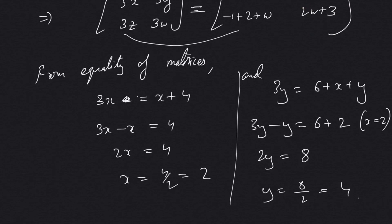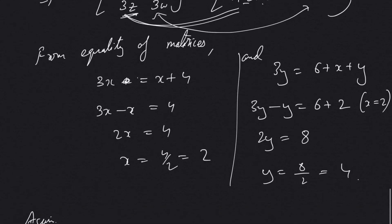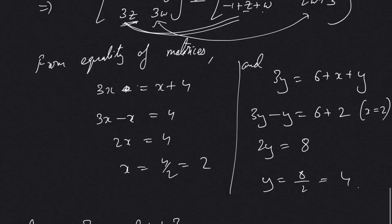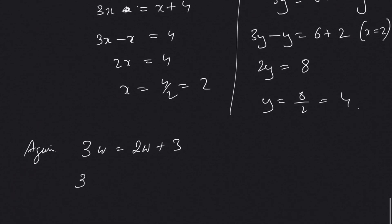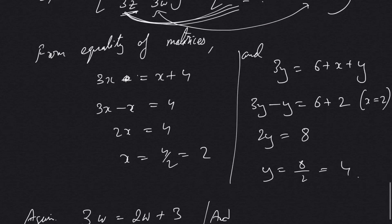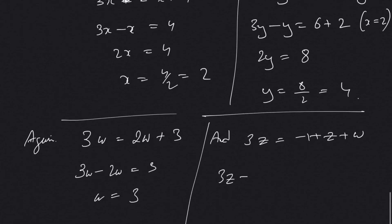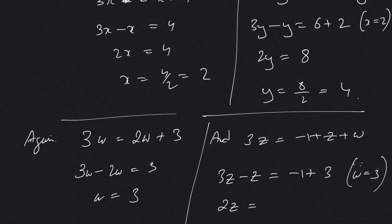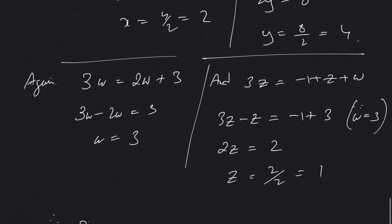Before solving 3z, I'll first solve the last corresponding elements to get the value of w. From 3w = 2w + 3, we get w = 3. Then for z: 3z = −1 + z + w, so 2z = −1 + 3 = 2, giving z = 1. So our respective values are: x = 2, y = 4, w = 3, and z = 1. I hope you liked this video.